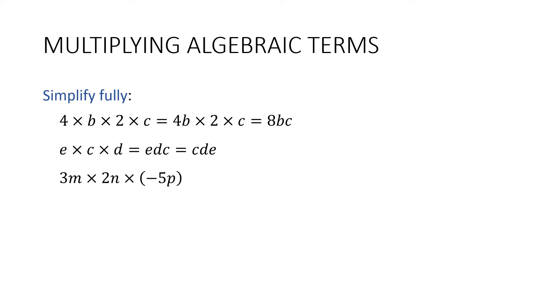3m times 2n times negative 5p. Let's start with the sign. Negative times a positive times a positive is a negative. 5 times 2 is 10 times 3 is 30. And then our pronumerals are already in alphabetical order.